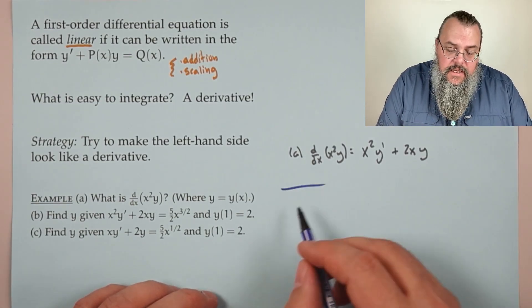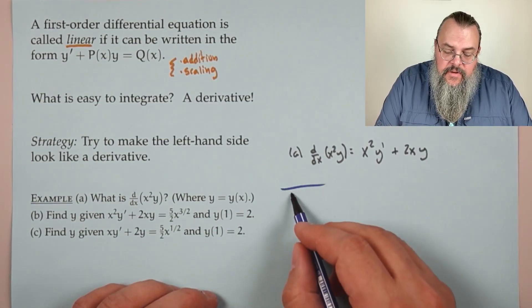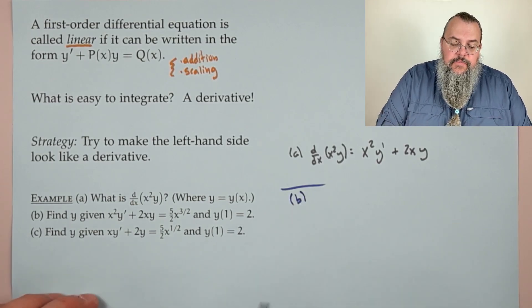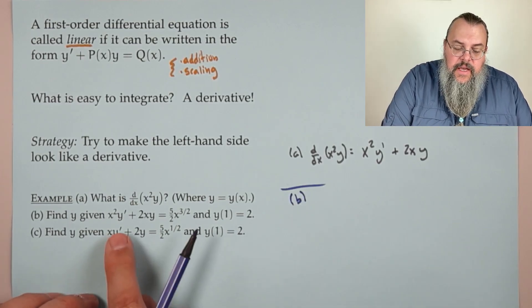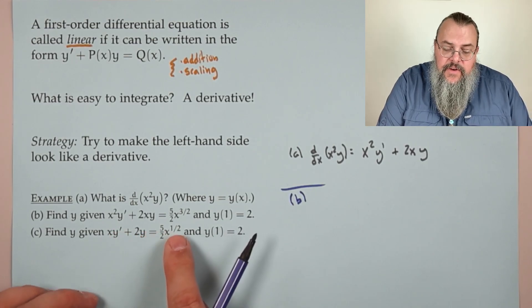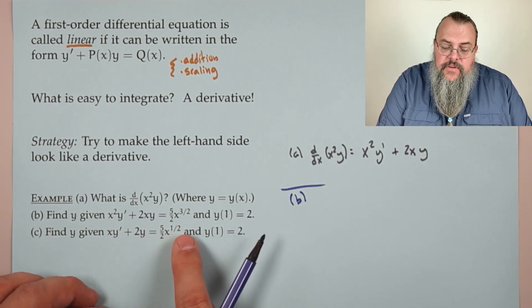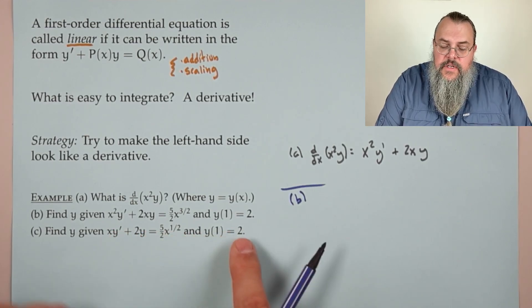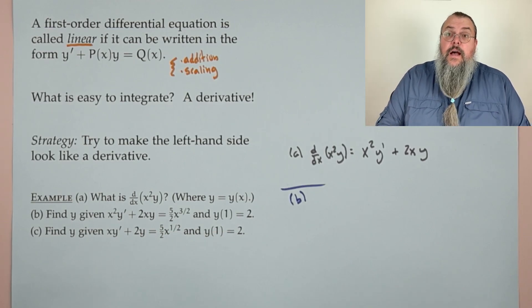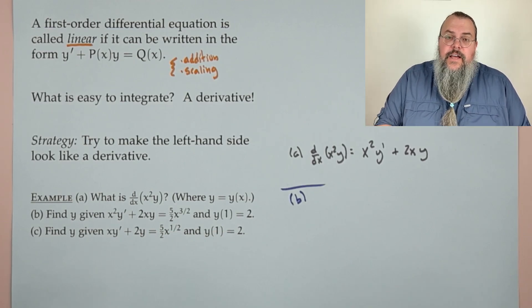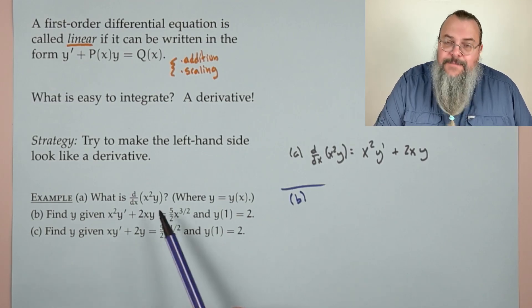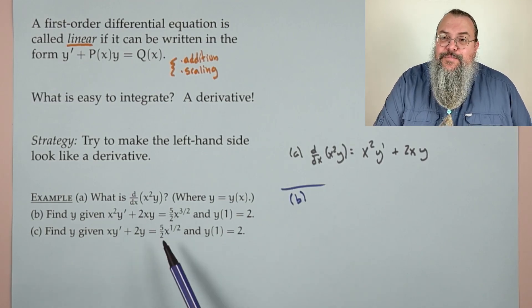Part (b) says: find y given x²y′ + 2xy = (5/2)x^(3/2), with y(1) = 2. That's a differential equation — a big leap from part (a), but let's see if there's a connection.